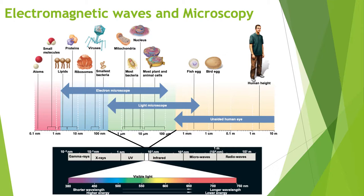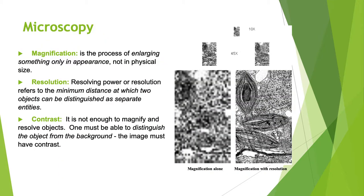Microscopy of any kind takes advantage of wavelengths and energy. If you want to see something very small very well, you need short wavelengths and lots of energy. The process of microscopy magnifies whatever you're trying to look at — it makes it appear bigger without actually making it bigger.